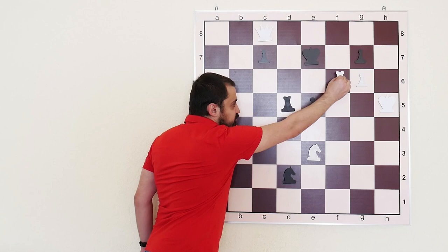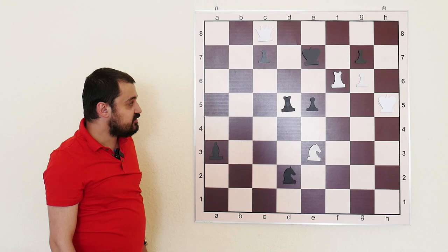The main and strong move is Rf6. We are sacrificing another piece.